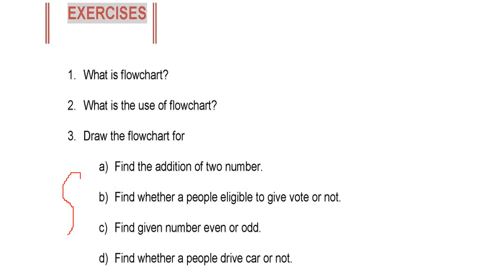A flowchart is a diagrammatic or symbolic representation of the steps for solving a certain problem. It shows the flow or control that a program is going to follow, and how we tackle different conditions, situations, and iterations — looping and multiple-time working of certain code or tasks.